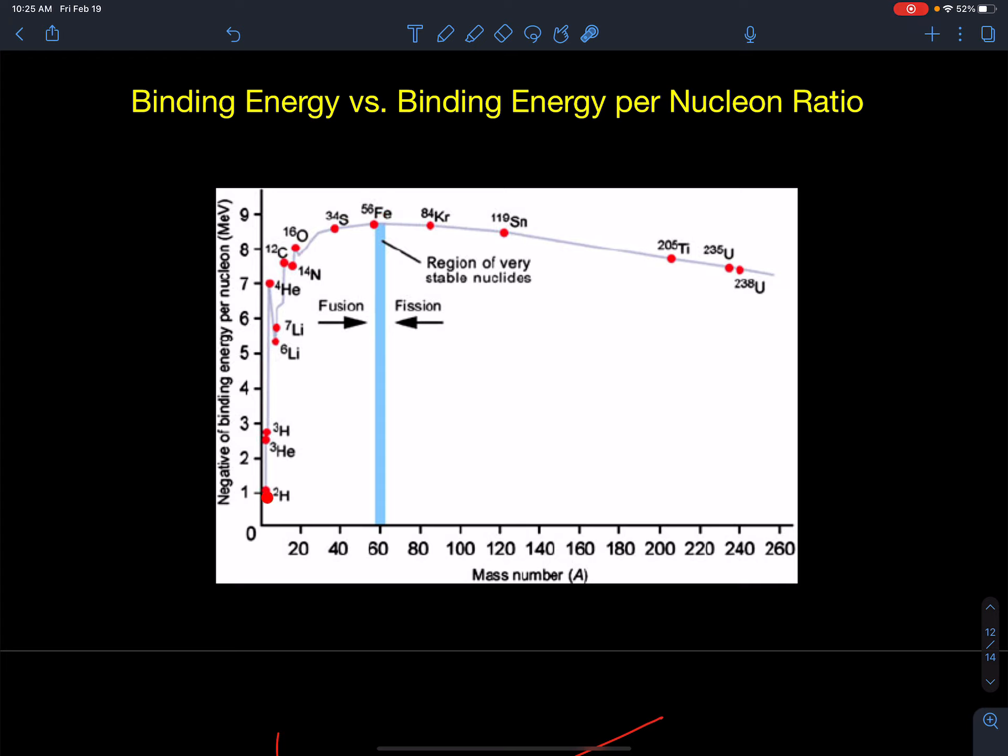We can see that before element 60 over here, that binding energy per nucleon increases. And remember I told you guys that iron 56 is the most stable nucleus there is because it's at the top of that peak. Iron 56 has the highest binding energy per nucleon in its nucleus, about 8.6 mega electron volts per nucleon is iron.